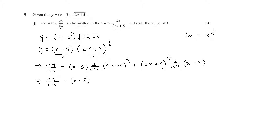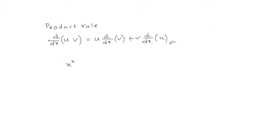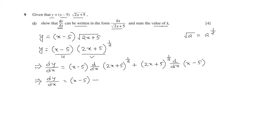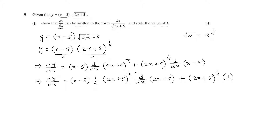Now we find the differentiation of 2x plus 5 whole to the power half. Using the power rule, differentiation of x to the power n is n times x to the power n minus 1. Applying this, n is half, so we get half times 2x plus 5 whole to the power half minus 1, multiplied by d over dx of 2x plus 5 due to the chain rule. Then plus 2x plus 5 whole to the power half times 1, since differentiation of x is 1 and differentiation of minus 5 is 0.